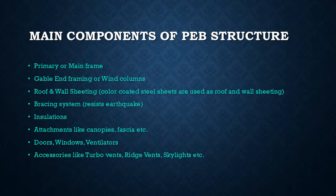There are some of the main components of PEB structure: primary or mainframe, gable end framing or wind columns, roof and wall sheeting, resist earthquake insulations, attachments like canopies, doors, windows, ventilators, and accessories like turbo vents, ridge vents, skylights, etc.